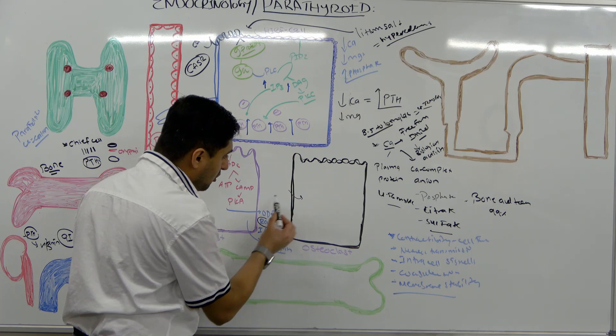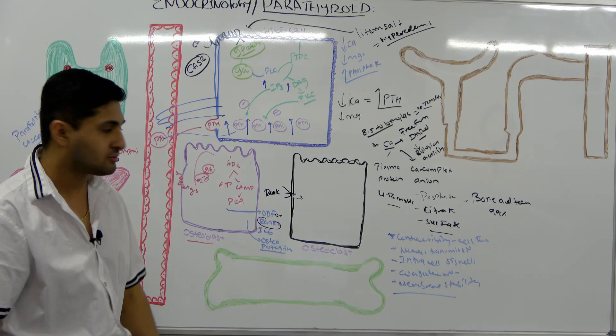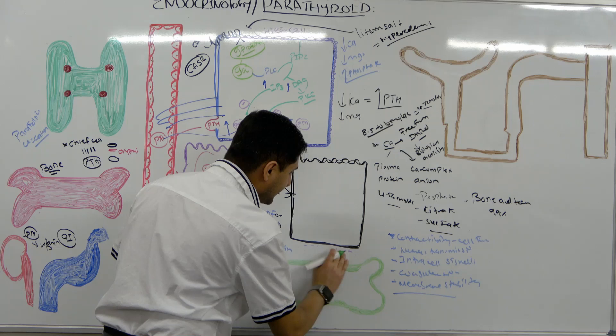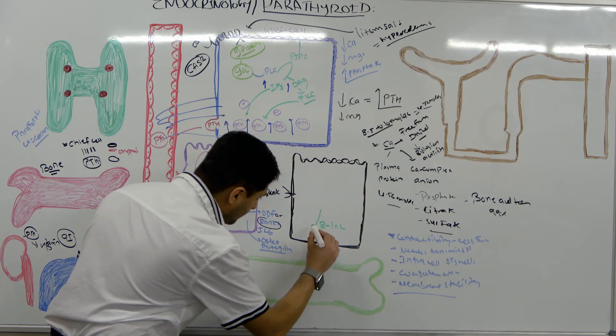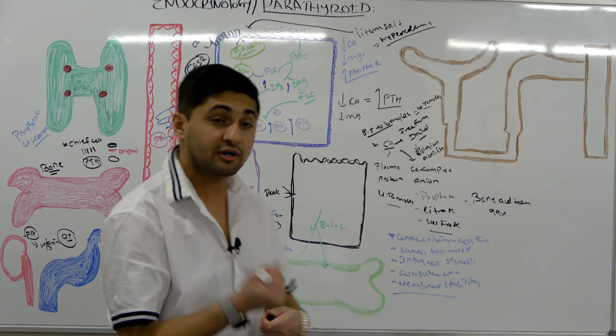RANKL and ODF have receptors on osteoclast cells. When RANKL goes and binds to its RANK receptor on the osteoclast, it stimulates those cells. Ultimately, these osteoclast cells start producing beta-integrins, which come and put a seal around the bone surface — this is called sealing off.